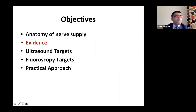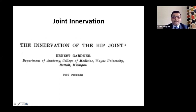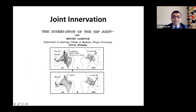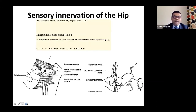We'll go through what nerves supply the hip joint, the evidence, ultrasound and fluoroscopy targets, and the practical approach. Nerve supply — not new — was described by Gardner back in 1948. Nerves supplying the anterior joint capsule are branches of the femoral nerve and branches of the obturator nerve. The posterior joint capsule is supplied by the nerve to quadratus femoris and the superior gluteal nerve.